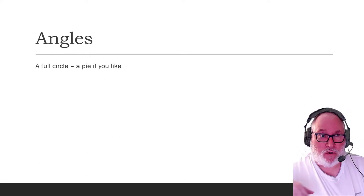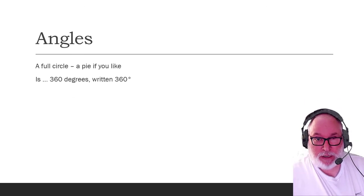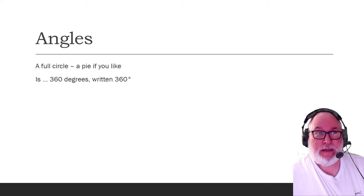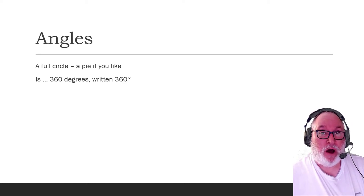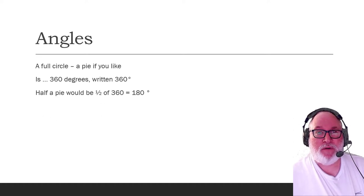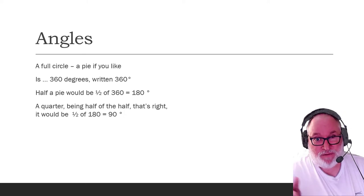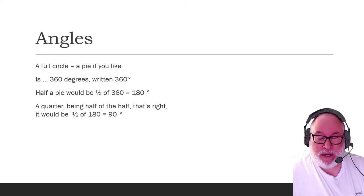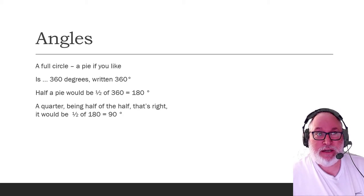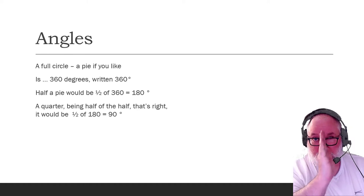So we look at angles. Just a recap: if we had a pie, you get a full circle which is 360 degrees, written with 360 with your degree symbol at the end there. So if we half that pie right down the middle, then it'd be half of 360 degrees, 180 degrees. So half a pie, half of 360.